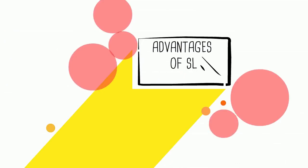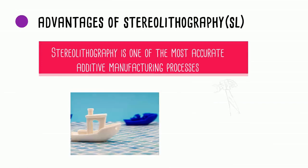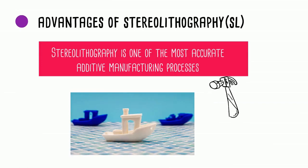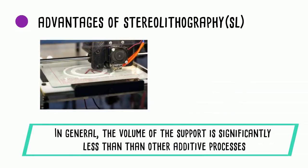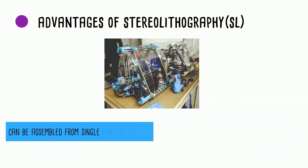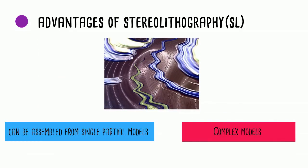Advantages of stereo lithography: stereo lithography is one of the most accurate additive manufacturing processes. In general, the volume of support is significantly less than other additive processes. It can be assembled from single partial models by joining the parts using the same photosensitive resin.